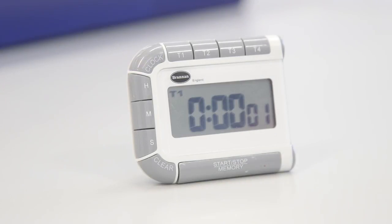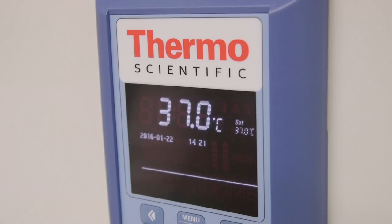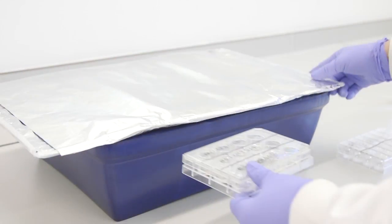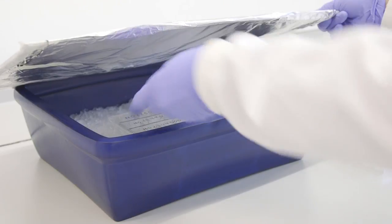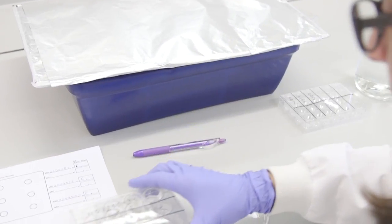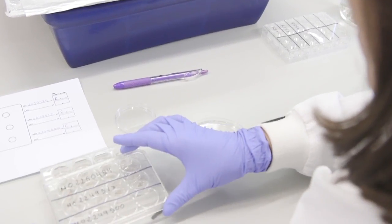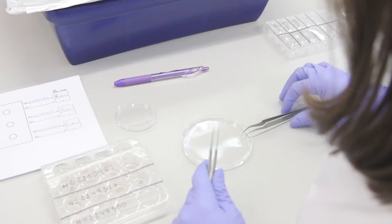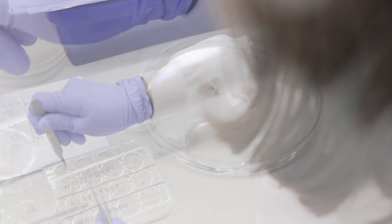When the timer sounds for the plate, remove it from the incubator and place it on ice to stop the chemical reaction. It is also important at this stage to protect the plate from light. Transfer the four ear halves from the first sample into a petri dish containing PBS at pH 7.4 so that they are floating on the surface.